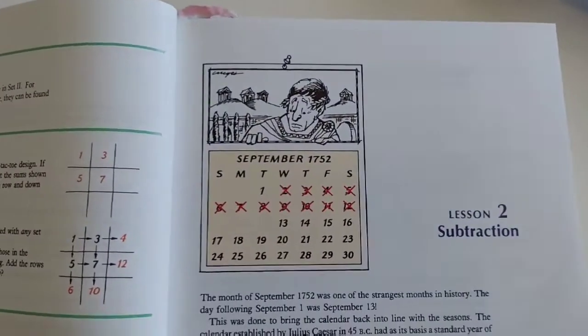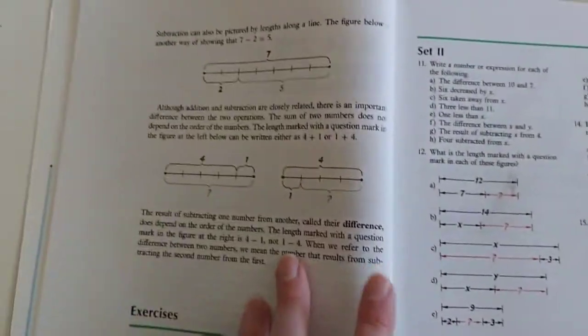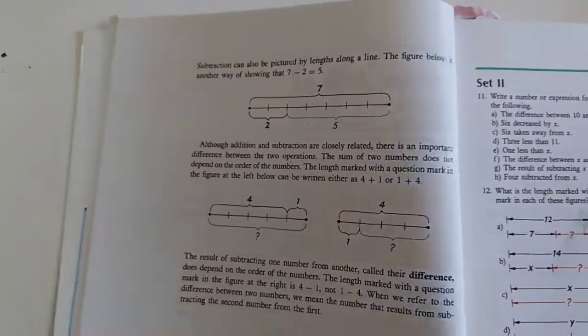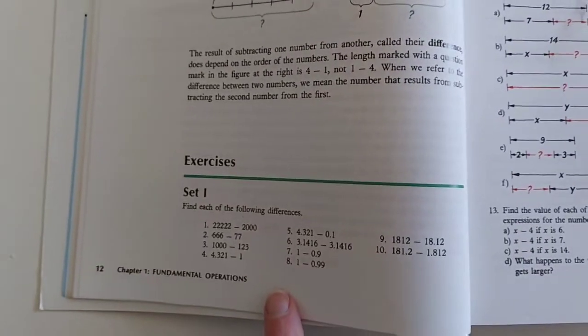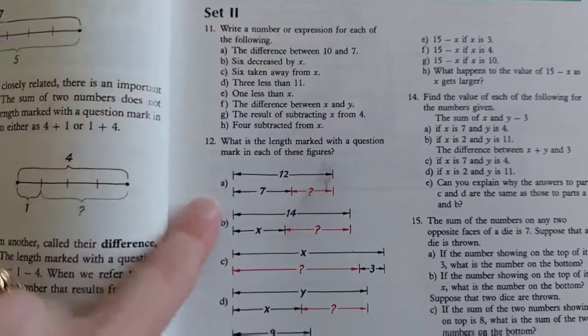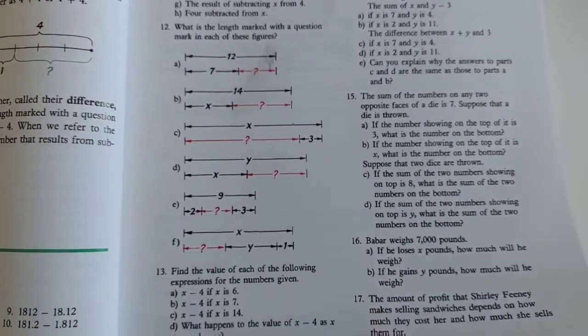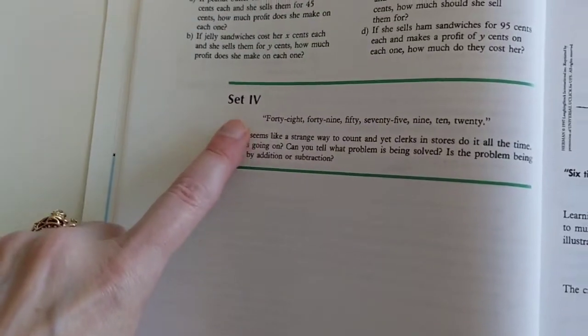And then this is lesson 2. And the lessons themselves are not very long, which is good if your children don't like to read a whole lot for math. Exercise 1. Here's set 2. Lots of word problems again. And then set 4. There's just one question.